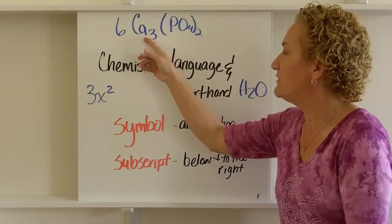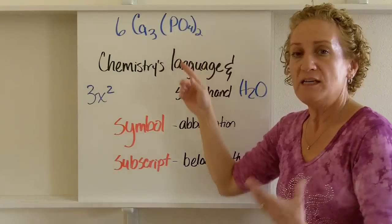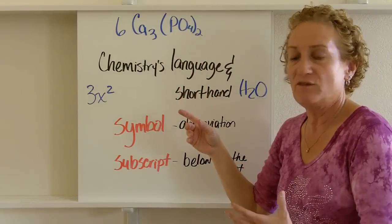So as you can see on this one, we have calcium, phosphorus, and oxygen. You may not have known that, but you can see there's one, two, three different symbols or three different abbreviations there.